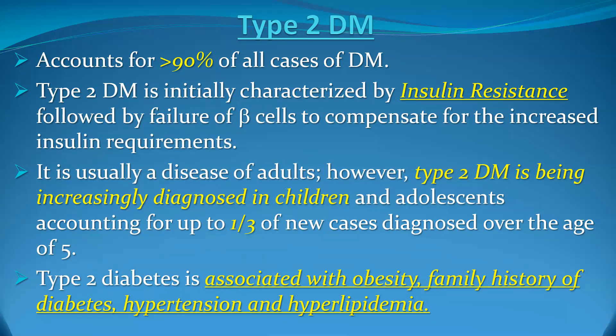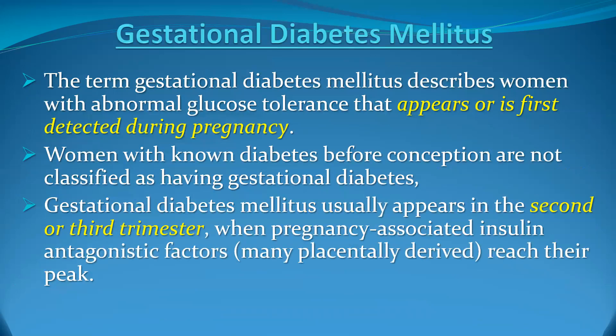Type 2 diabetes accounts for more than 90 percent of cases. The initial mechanism is insulin resistance. Although typically seen in later life, type 2 diabetes is now frequently encountered in children due to poor dietary habits and increased prevalence of overweight and obesity. Type 2 diabetes is very frequently associated with obesity, family history of diabetes, hypertension, hyperlipidemia, and ischemic heart disease.